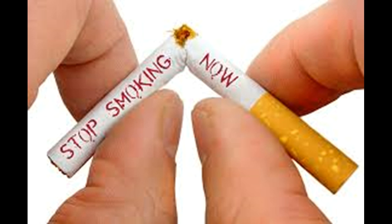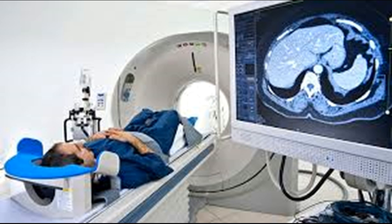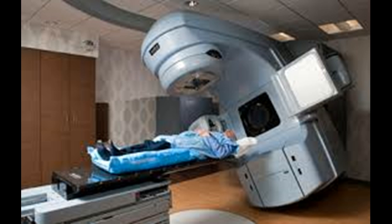Diagnosis. Tests and procedures used to diagnose stomach cancer include a tiny camera to see inside your stomach — upper endoscopy. A tiny tube containing a tiny camera is passed down your throat and into your stomach, and your doctor can look for signs of cancer. If any suspicious areas are found, a piece of tissue can be collected for analysis — a biopsy. Imaging tests used to look for stomach cancer include computerized tomography, CT scans, and a special type of X-ray exam called a barium swallow.